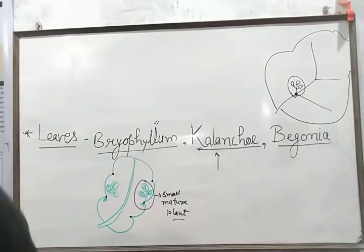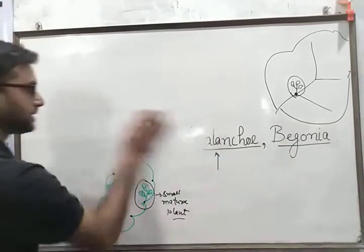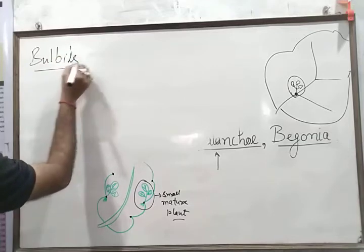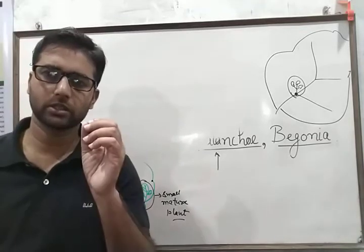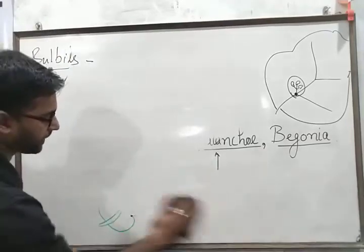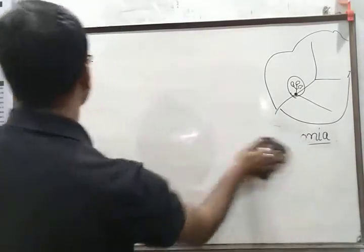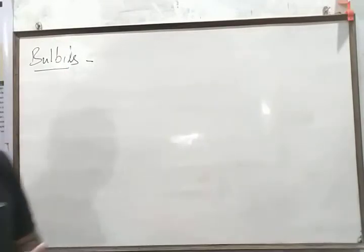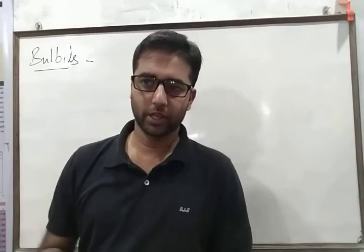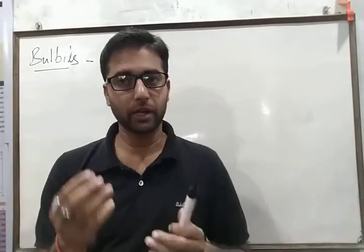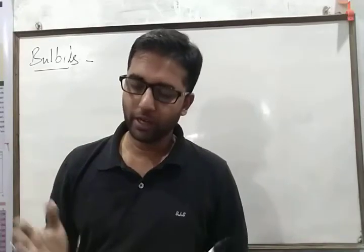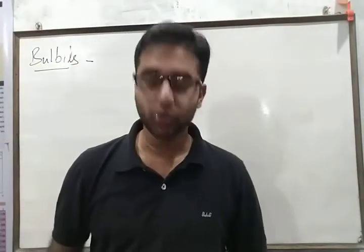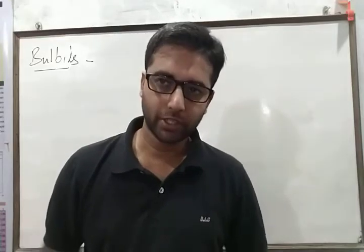The next and last one is propagation by bulbils. Bulbils are specific structures present in some plants like Agave. In Agave, some bulbils grow into buds and eventually they are converted into new plantlets, and when detached from the parent body, they give rise to a new complete plant. So, this is all about natural vegetative propagation.